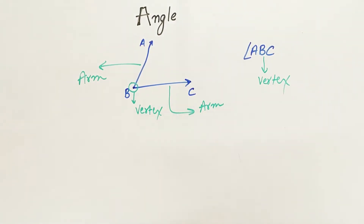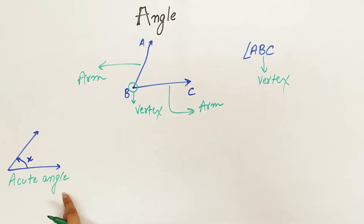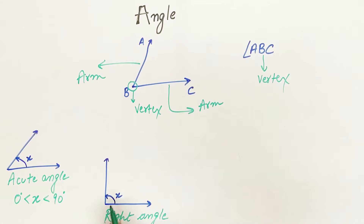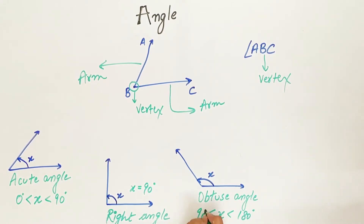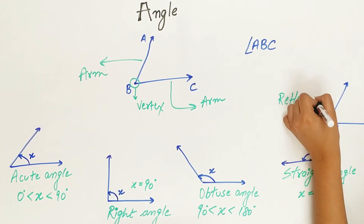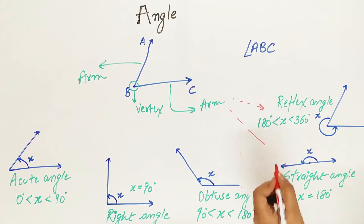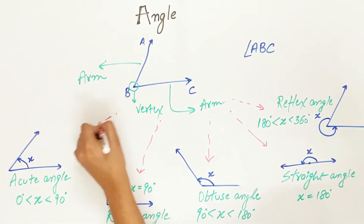Let's look at different types of angles. An acute angle is less than 90 degrees but greater than 0 degrees. A right angle is exactly 90 degrees. An obtuse angle is less than 180 degrees but greater than 90 degrees. A straight angle is equal to 180 degrees. A reflex angle lies between 180 degrees and 360 degrees. So these are five types of angles.